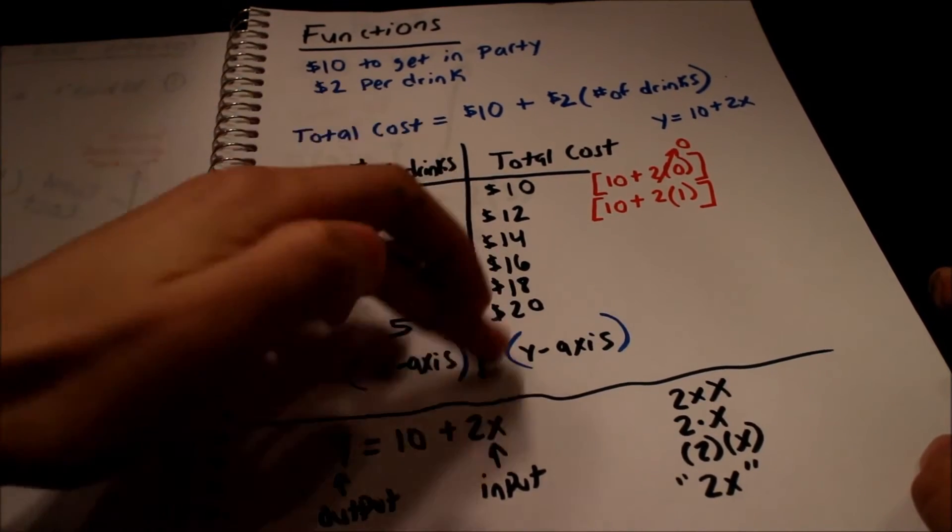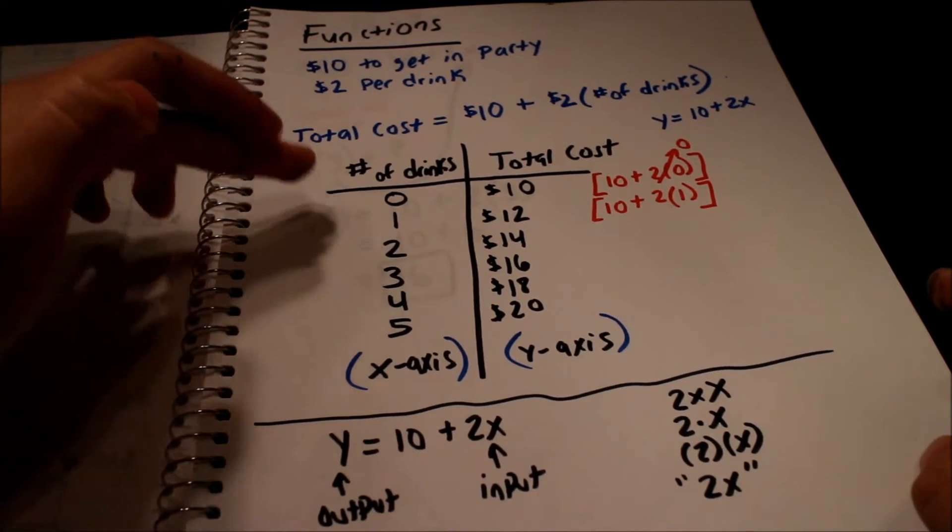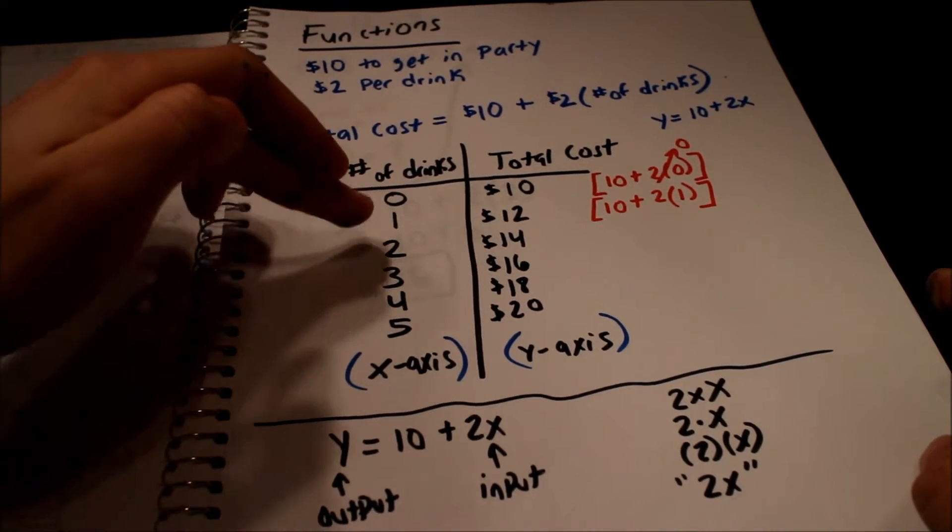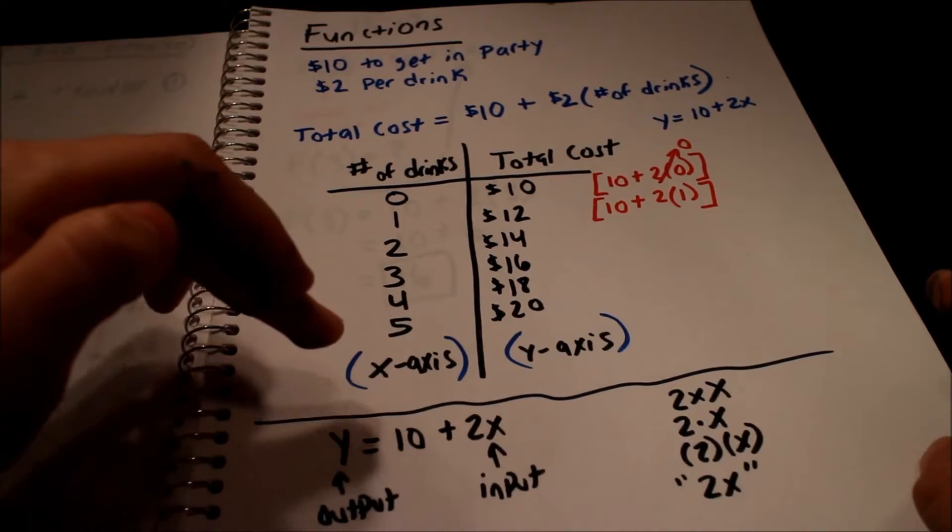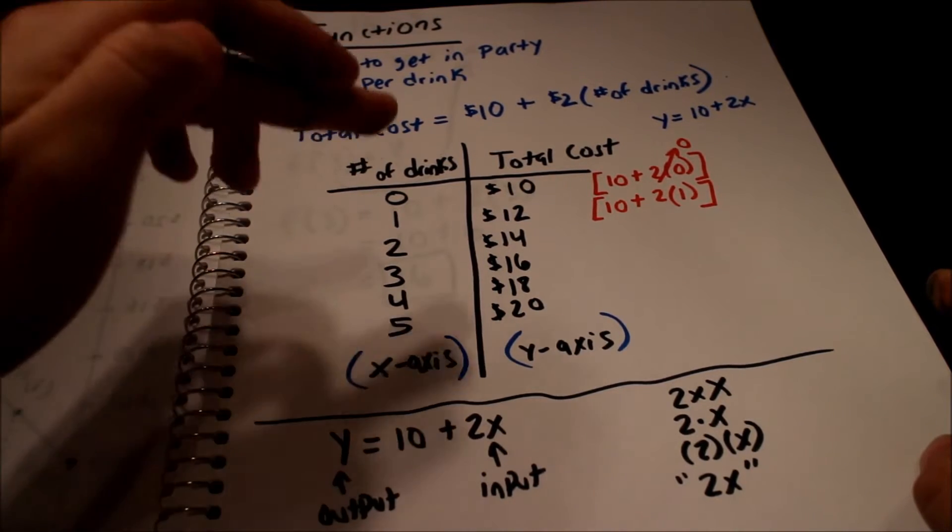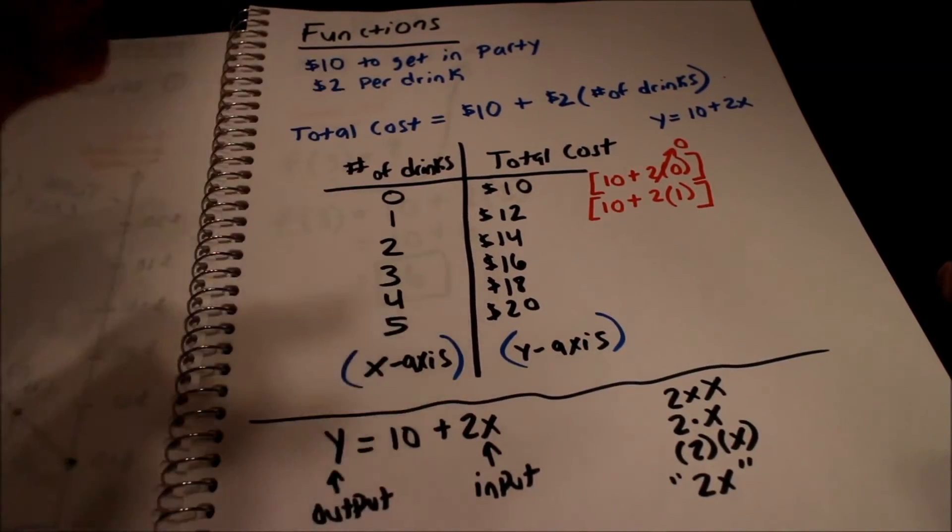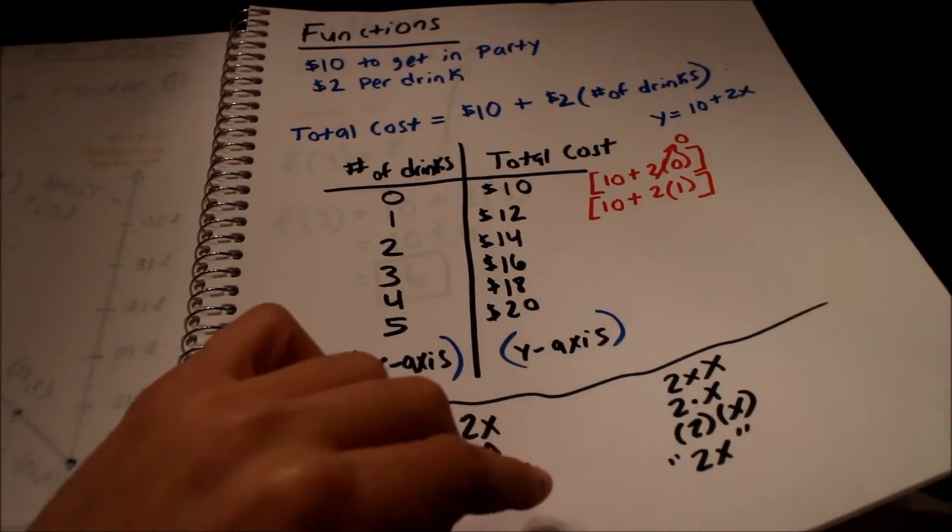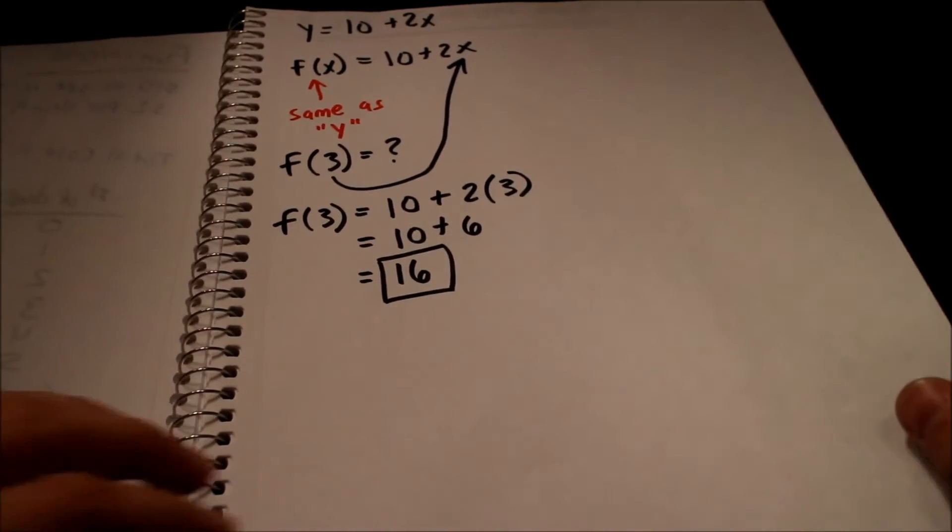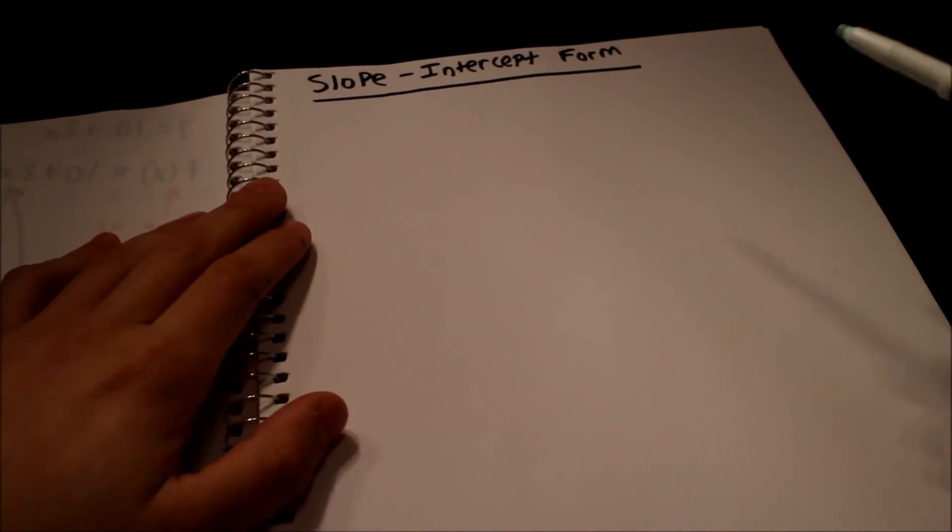So we made a table here where you can see the number of drinks over here and the total cost there. So the total cost is a function of the number of drinks. It depends on how many drinks you have because if you have nothing it would just be $10 which is the cover charge to get into that party. So moving on, slope intercept form.